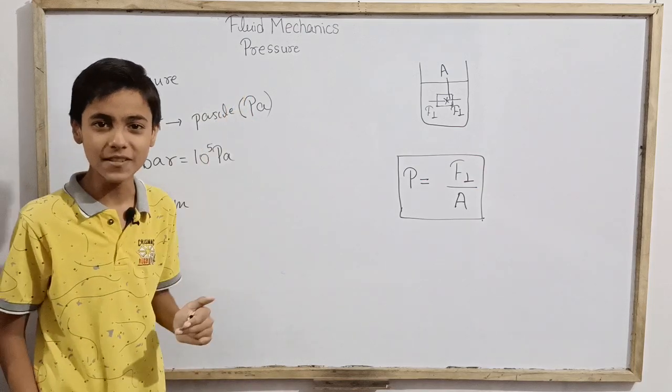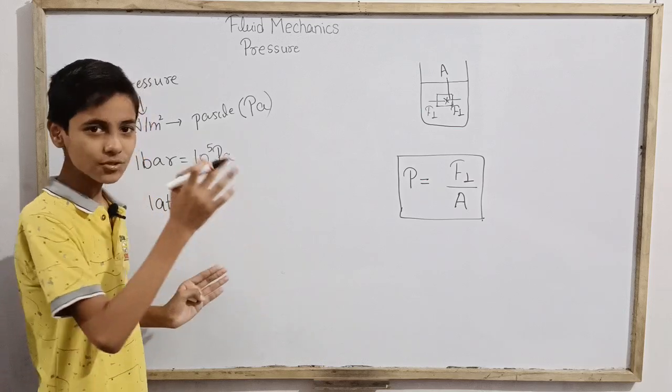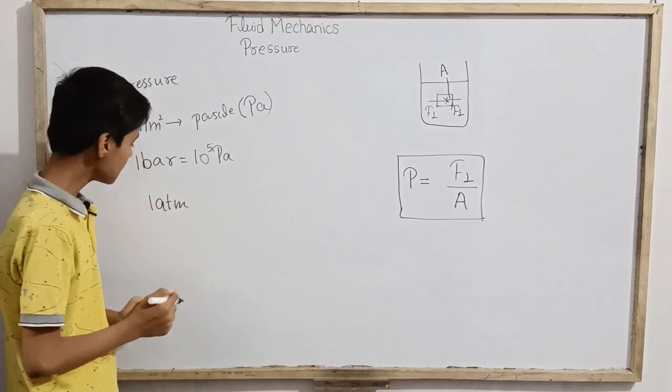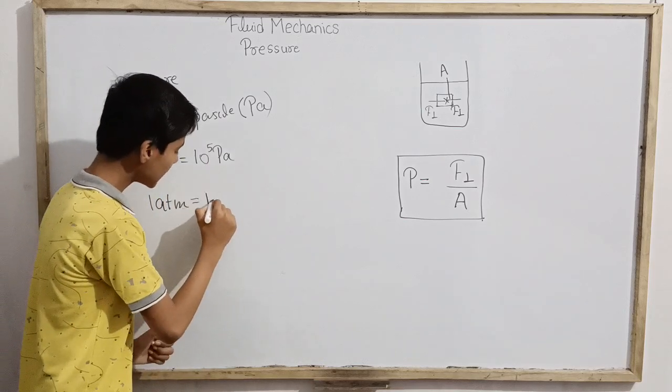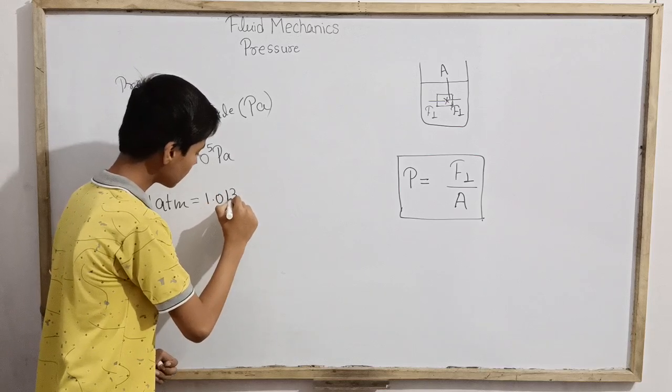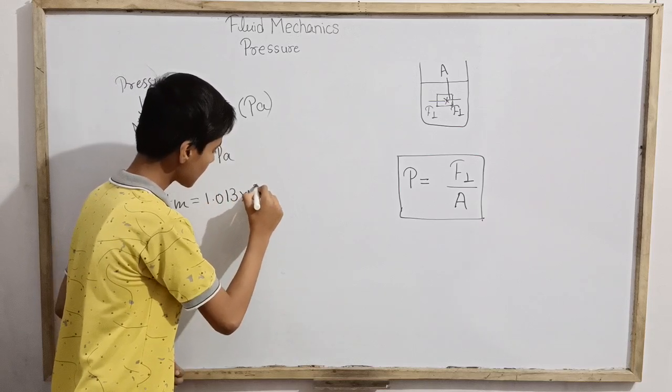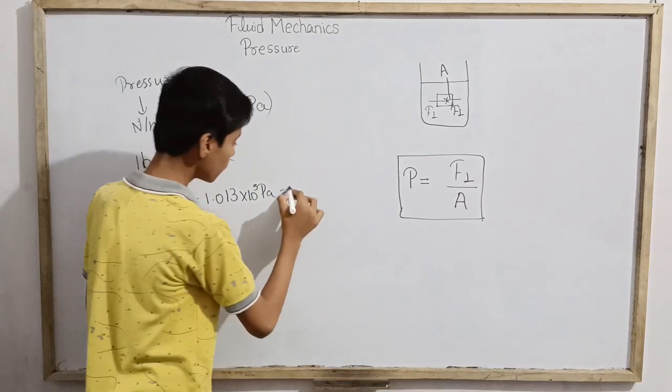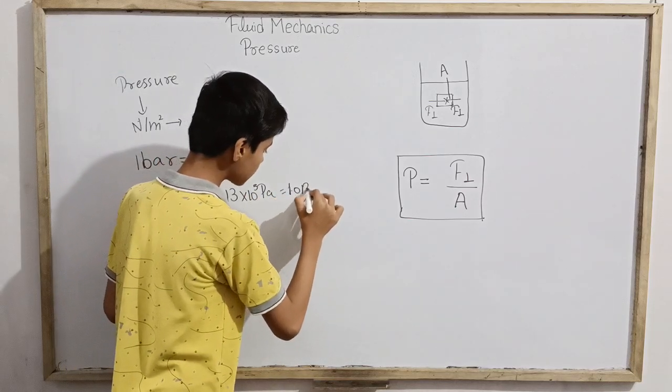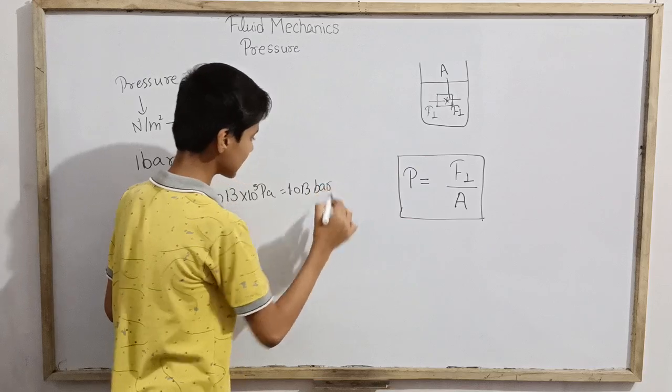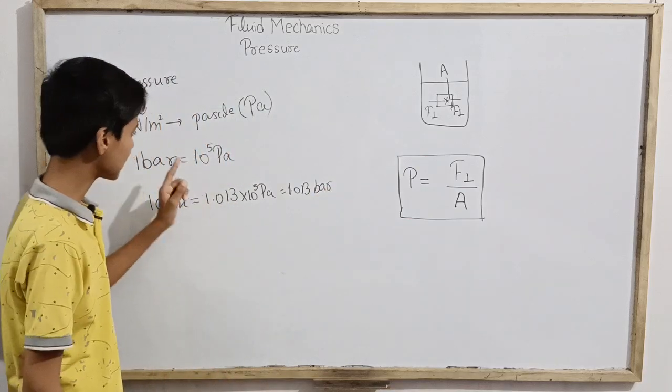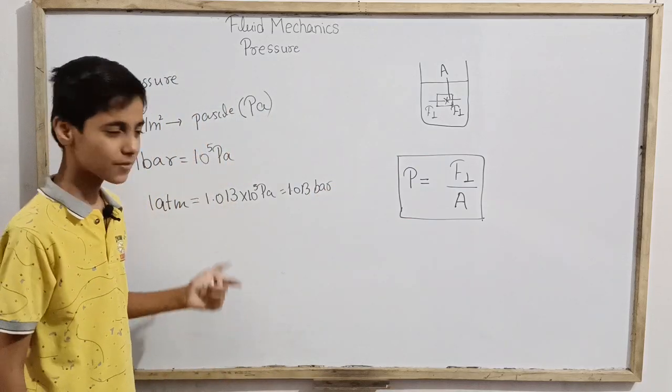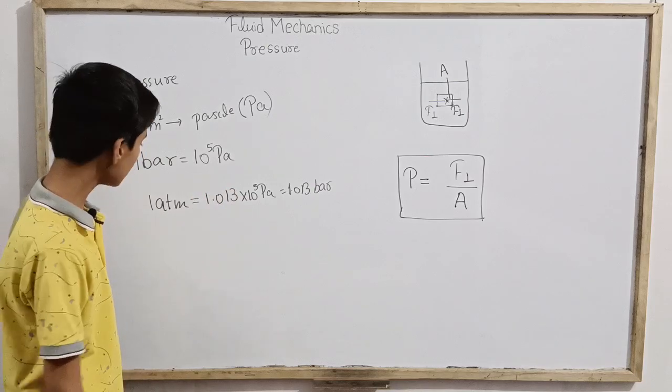This pressure at sea level, as you change the heights of elevation, 1 atmosphere we usually define as 1.013 into 10 power 5 pascals. We can say this is 1.013 bar also, or in millibar, which is actually 100 pascals or 10 squared pascals.